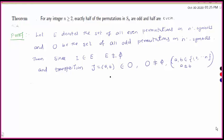Hello students, now we are going to prove the important theorem that the number of even permutations is equal to the number of odd permutations. For any integer n greater than or equal to 2, exactly half of the permutations in Sn are odd and half are even. That is, if total number of permutations in Sn is n factorial, then number of even permutations is n factorial by 2 and number of odd permutations is n factorial by 2.